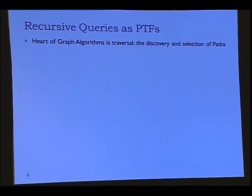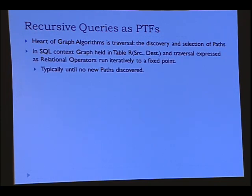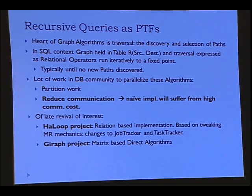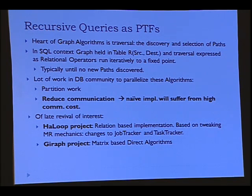The next class of problems is recursive queries, basically used to implement graph algorithms. The heart of these is to discover and select paths. In the SQL context, assume there's a table R which contains source and destination among other edge information. There's a lot of work done in the database community on this for years. To parallelize these algorithms, you partition the work, but in the case of recursive queries it's also critical to reduce communication, because the number of paths in a graph are far more than the edges. There's been a revival of interest — there's the HALOOP project modeling these as relation-based implementations, and the Giraffe project looking at them as matrix-based algorithms.